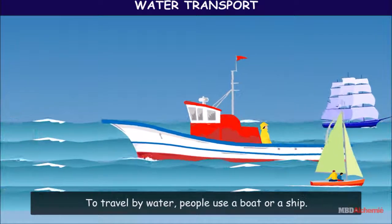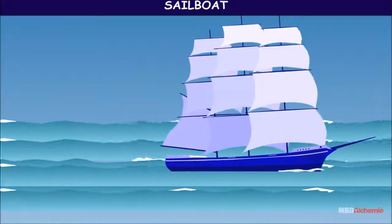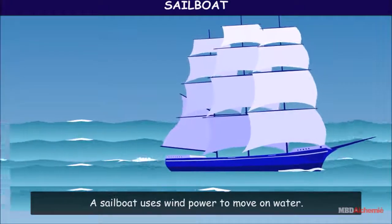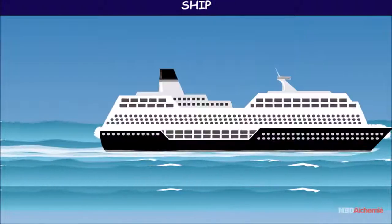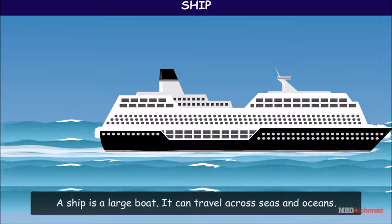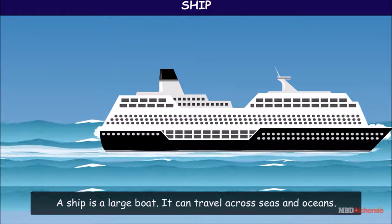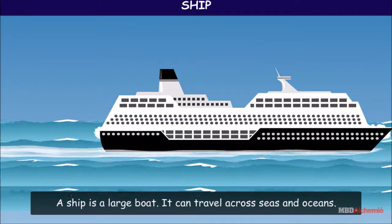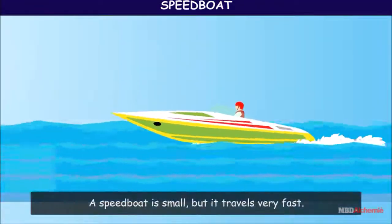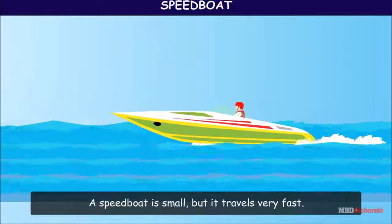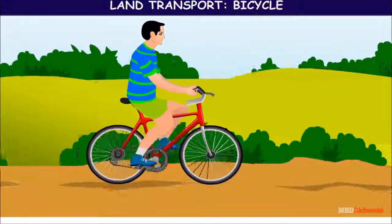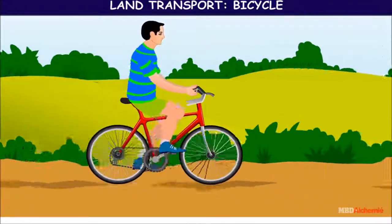Water transport: to travel by water, people use a boat or a ship. A sailboat uses wind power to move on water. A ship is a large boat that can travel across seas and oceans. A speedboat is small but it travels very fast.